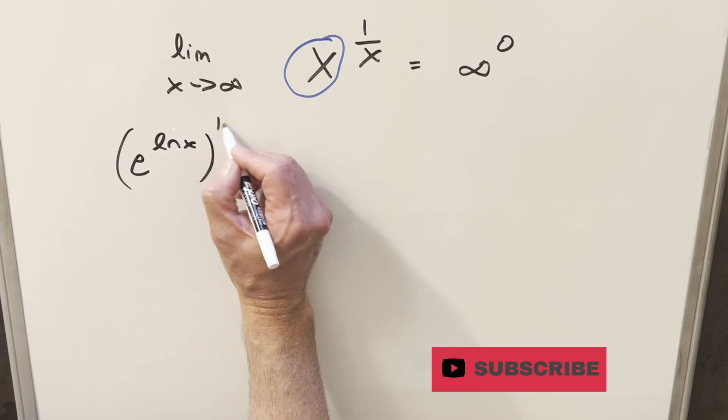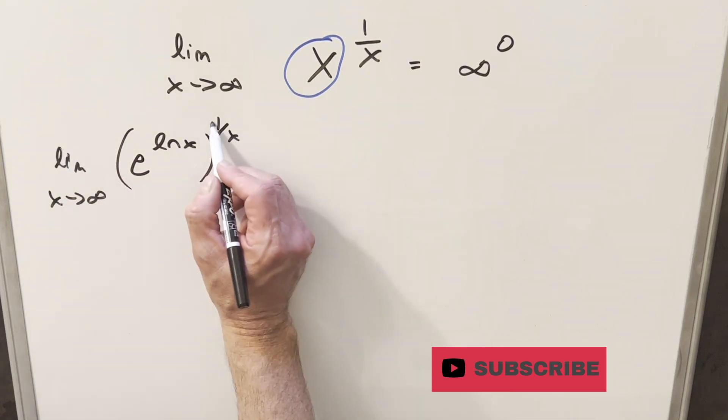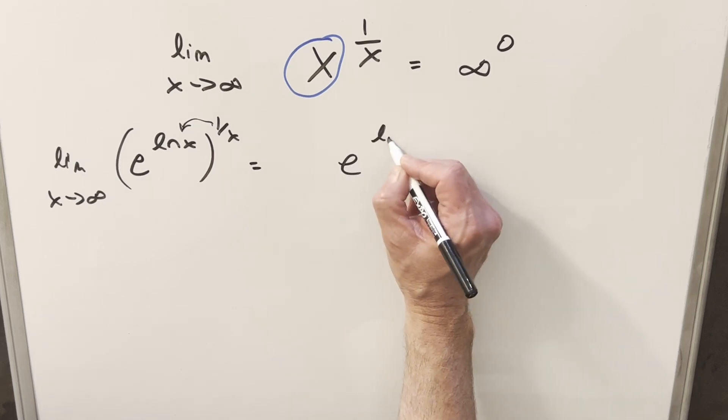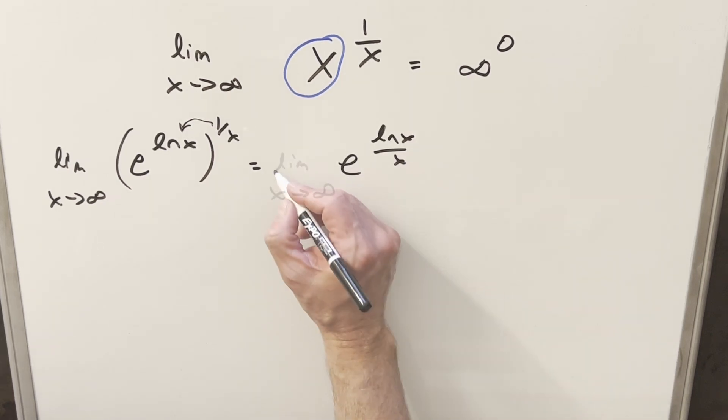And this is all going to be to the 1 over x. But then with exponent properties, we can multiply in that 1 over x. And I can rewrite this as e to the ln x over x.